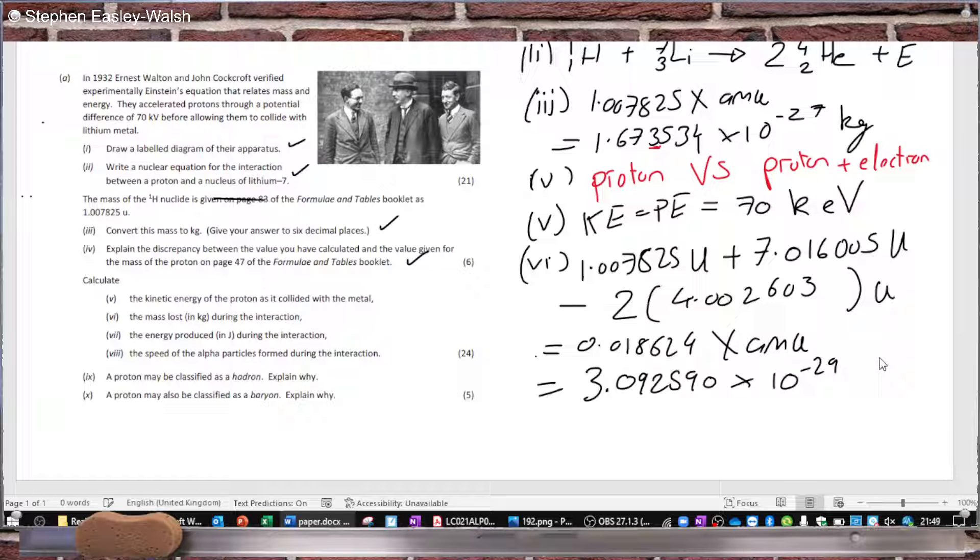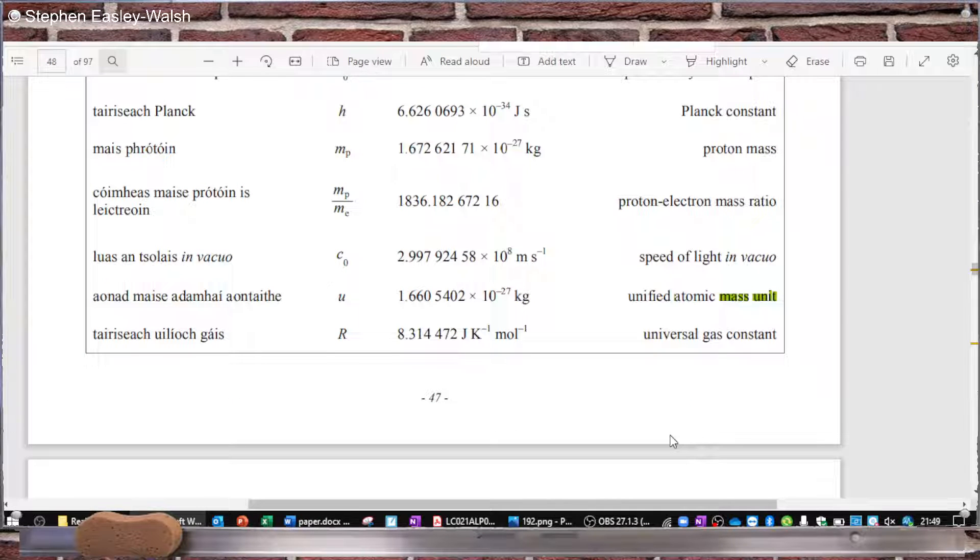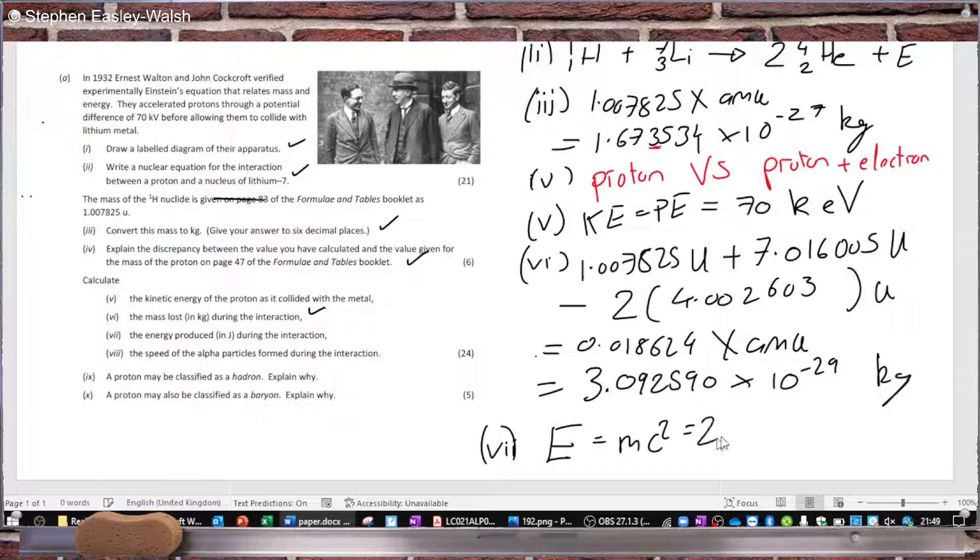Calculate the energy produced in joules. The energy is just Einstein's E equals mc squared. So I have the mass, now I just need to multiply by the speed of light squared. Speed of light is 2.99792458 times 10 to the power of 8, squared. That equals 2.779481 times 10 to the minus 12 joules.